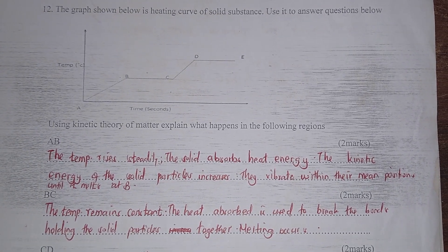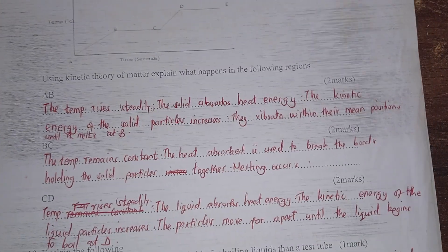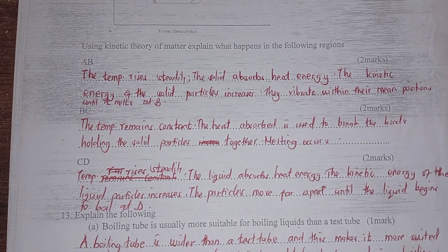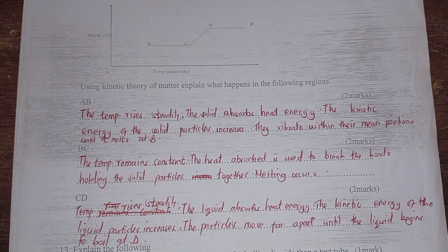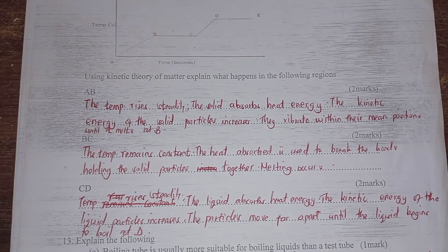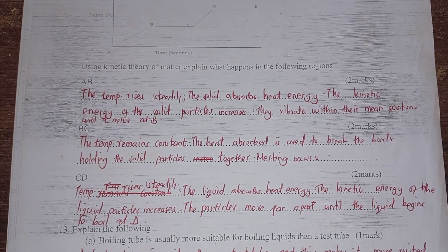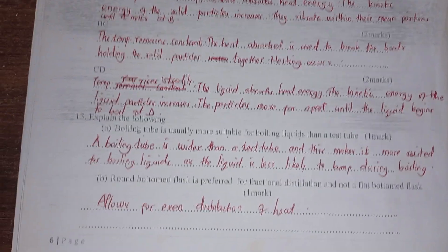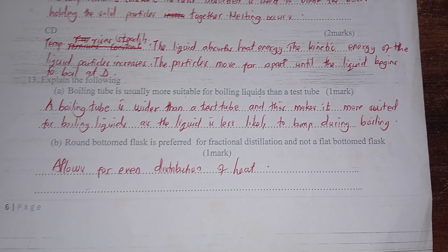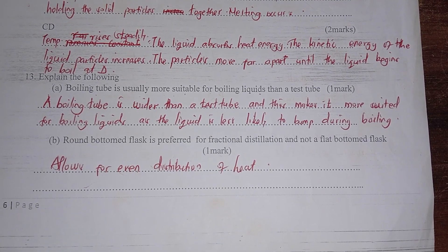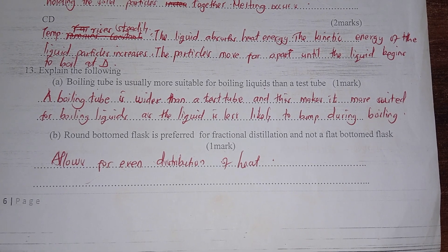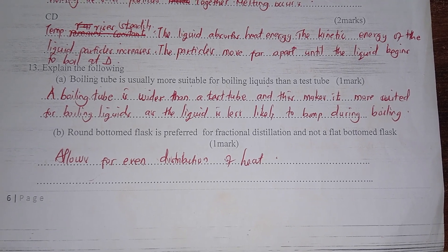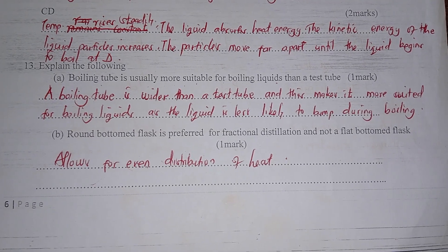The heating curve: from point A to B, there is a rapid increase in temperature as the solid absorbs heat energy and gains kinetic energy — the particles vibrate in position. B to C is the melting point, where the solids melt and forces of attraction between particles are broken down. C to D, temperature increases again and the liquid reaches its boiling point. A boiling tube is usually more suitable for boiling liquids than a test tube because it is wider. A round-bottom flask is preferred for fractional distillation because it allows even distribution of heat.